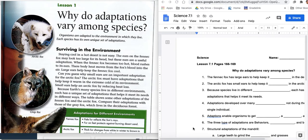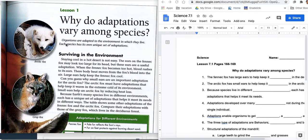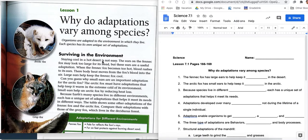Happy Tuesday. We're ready to get started on our lesson in science class as we start to talk about different adaptations today that animals have that help them survive. So lesson one, the question is why do adaptations vary among animals? And we're going to talk about three different foxes to get us started out. The summary statement says organisms are adapted to the environment in which they live. Each species has its own unique set of adaptations. You got your notes ready to go. Let's roll.